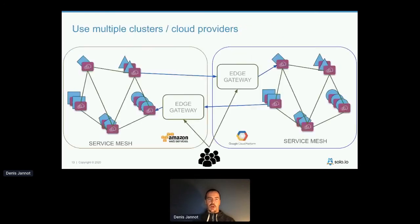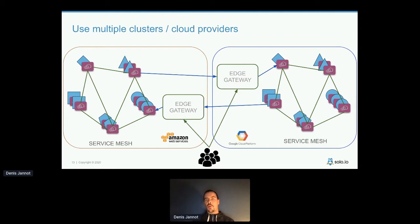When people start adopting a service mesh, the next thing they want is cross-cluster communication. Focusing on Istio — clearly the most popular service mesh — you can enable cross-cluster communication, but it's not easy.